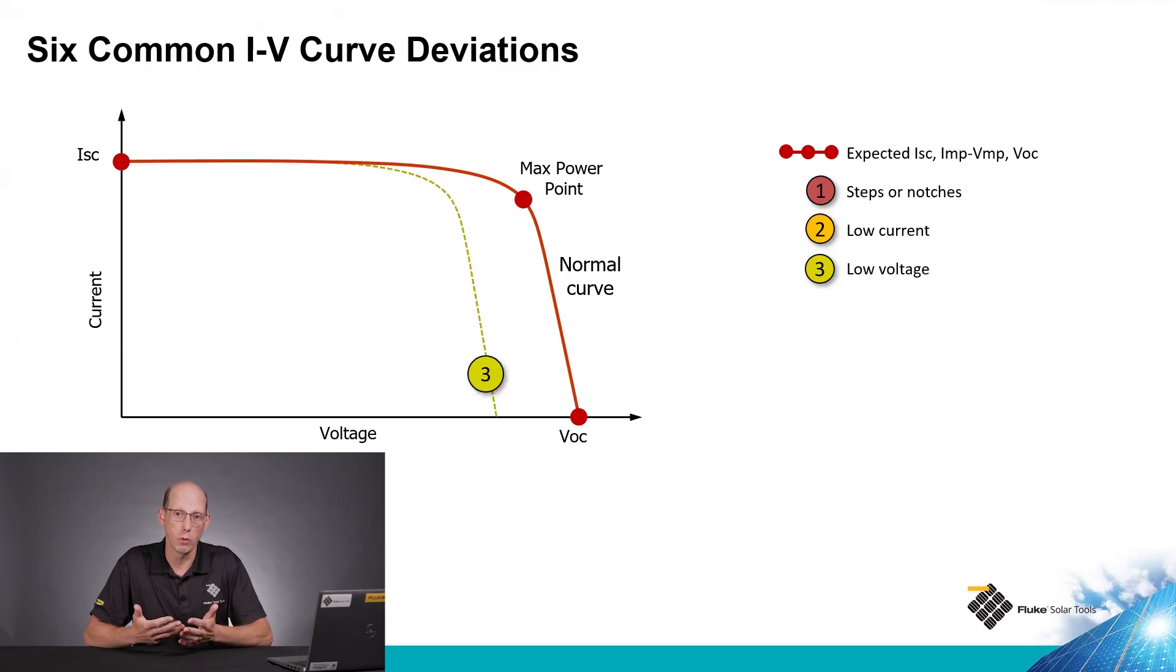The third deviation is low voltage. This could be caused by something like increased resistance in the line that you're testing. Maybe the wire was undersized or there's corrosion in one of the connectors or internally into the module that's causing additional resistance.